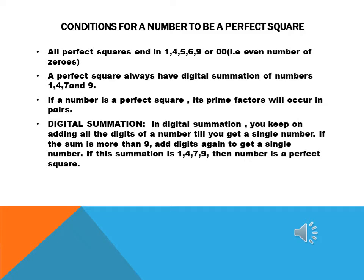If we are given a number and we have to determine whether it is a perfect square or not, we have some conditions. If a number ends in 1, 4, 5, 6, 9, or 00 (that is, an even number of zeros), we say that it is a perfect square. Also, if we do prime factorization of a number and we get the factors in pairs, we say that it is a perfect square.